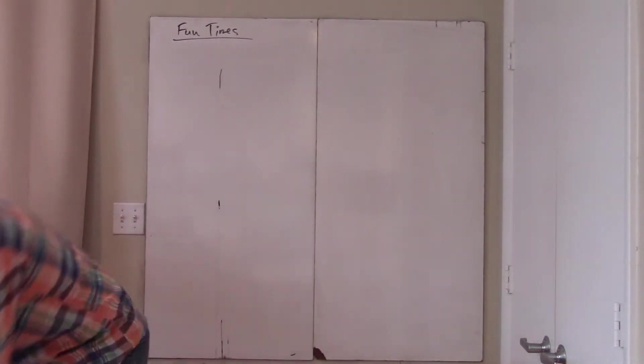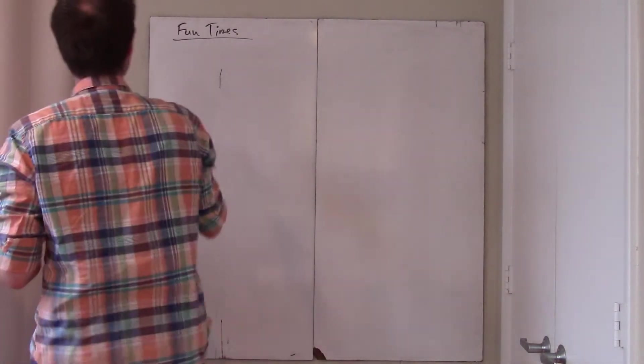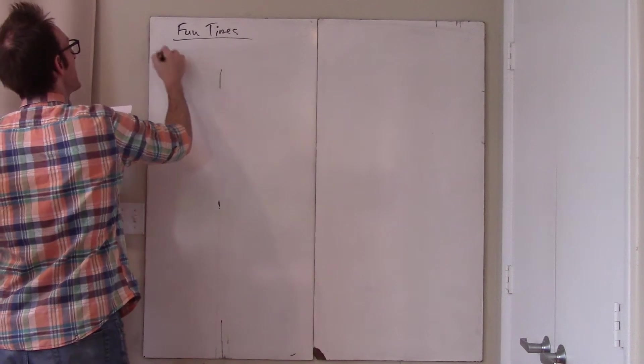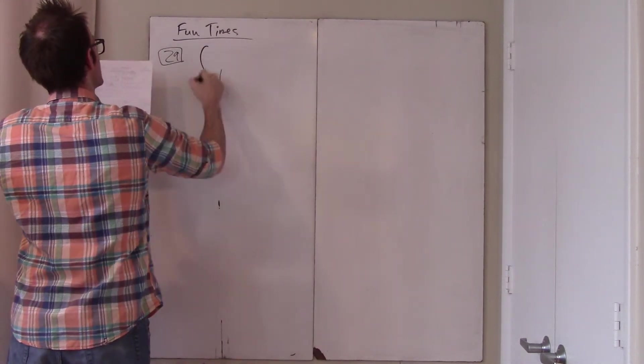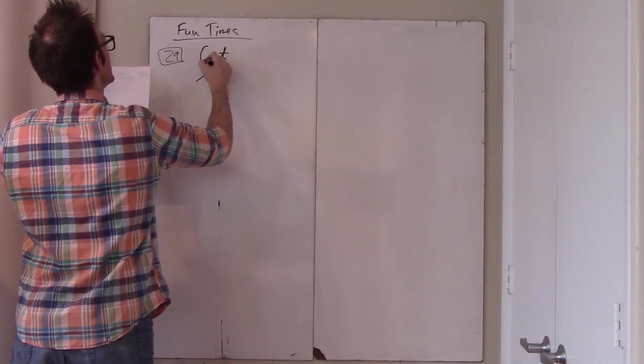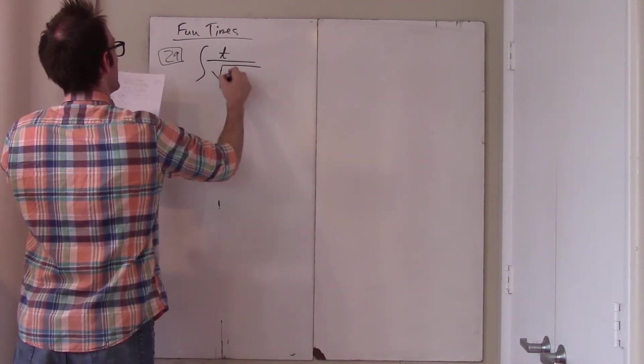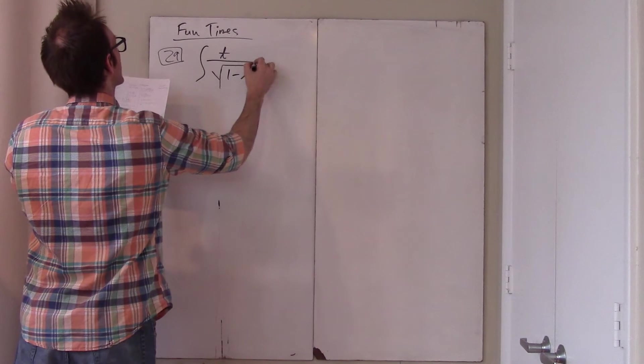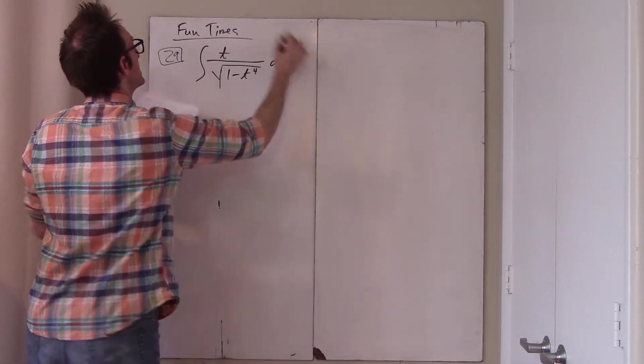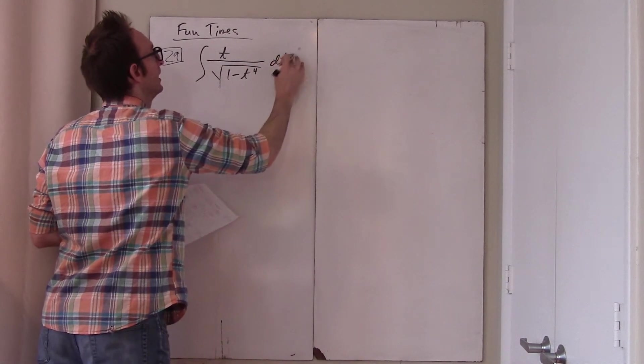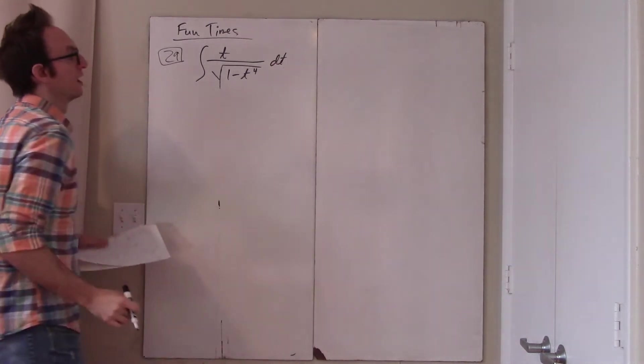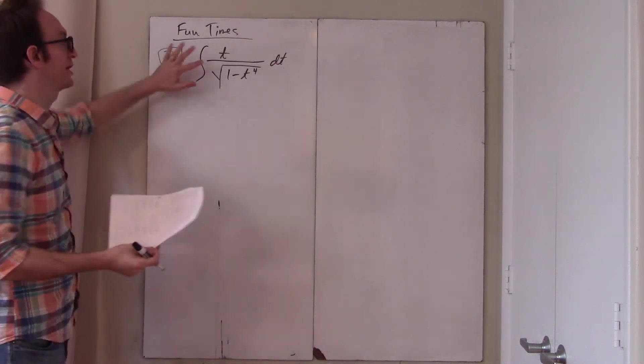28, no, 29. Problem 29 asks: what's the anti-derivative of T over root 1 minus T to the 4th, DT? Okay, well, once again, you have to know things.